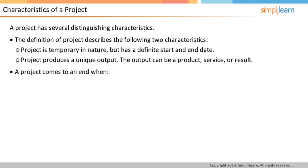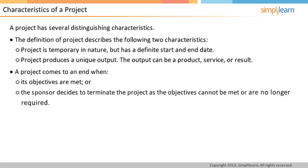Now, let us look at what marks the end of a project. A project ends when either the objectives are met or the project is terminated because the objectives will not or cannot be met. The other reason to terminate the project can be that the need for the output does not exist anymore. Usually, the sponsor of the project takes a call about the closure of the project.